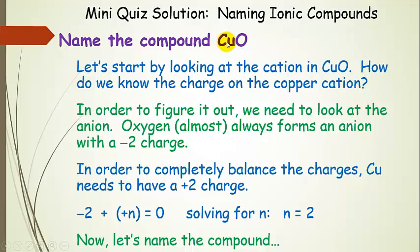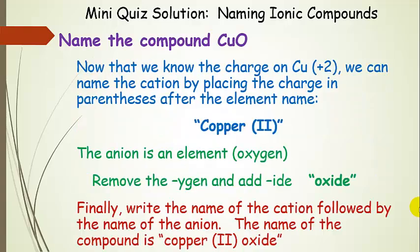If all the charges balance in this compound and oxygen is minus 2, then copper has to be plus 2 — plus 2 and minus 2 cancel out. If you like algebra, we set up the simple equation: anion charge plus N equals zero, solve for N, and we get N equals 2, so copper is 2+. The cation name is copper 2. We name oxygen the same way as before — remove YGEN, add IDE — to get oxide. Putting it together, the compound name is copper 2 oxide, with the charge on the cation written between the cation and anion names.